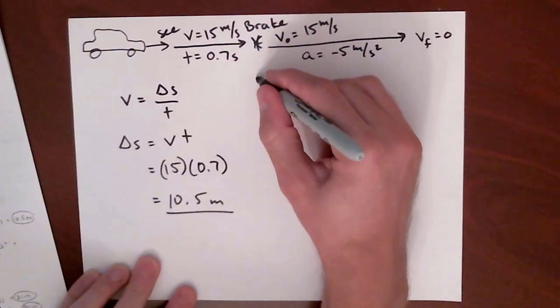That's why we use this equation, V equals delta S over T. Rearrange it, plug in what we know, and we get 10.5 meters for the reaction distance.